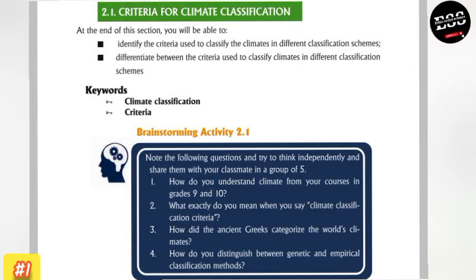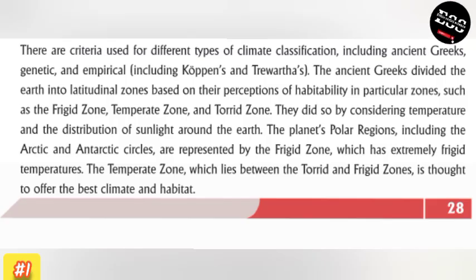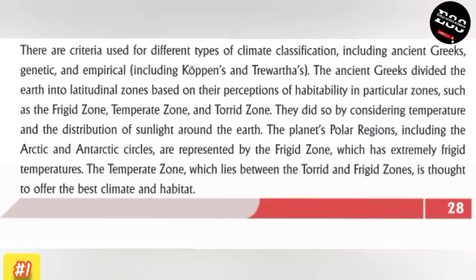Section 1.1: Criteria for Climate Classification. There are criteria used for climate classification, including the Greek approach, genetic, and empirical classifications.